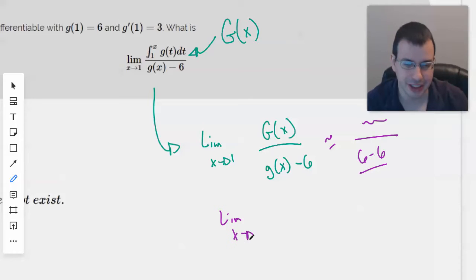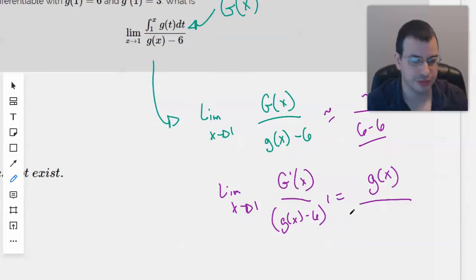L'Hopital's rule says that the limit as x approaches 1, big G prime of x over g of x prime, which equals g of x. So the derivative of the integral is just the function. The derivative of 6 is going to be 0, because the derivative of a constant is always 0. And then the derivative of g of x will be g prime of x.